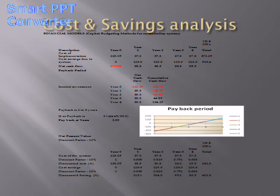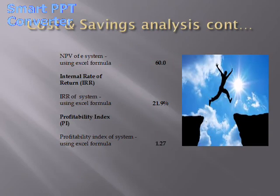In this slide, I have presented a financial viability analysis including: payback period, net present value (NPV), internal rate of return (IRR), and profitability index. You may refer to the handout and spreadsheet for detailed analysis. In short, the payback period is 2.5 years and the NPV is $60,000 at a discount rate of 10%. The IRR — the rate at which NPV equals zero — is 21.9%, and the profitability index is 1.27, meaning $0.27 NPV per US dollar invested.